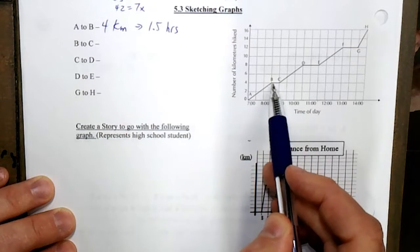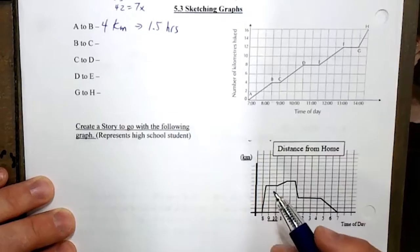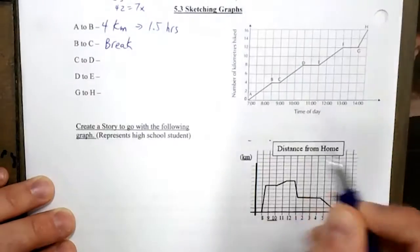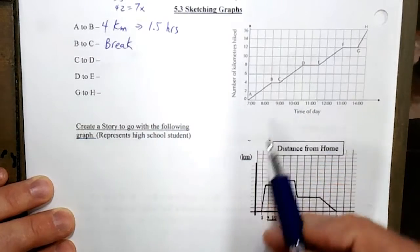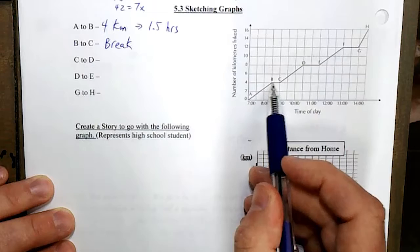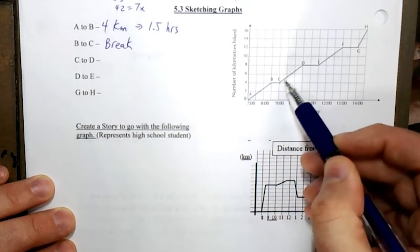Now from B to C you see that they're not moving, they're not moving away or closer to where they started. So from B to C it's break - they have stopped moving. And we can see that anytime there's a horizontal line, they stop for half an hour. At 9 o'clock they keep traveling.